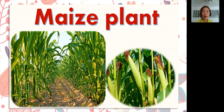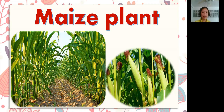The next example is maize plant. Again: maize plant. What you can see on the screen is maize plant. Let's spell the word: M-A-I-Z-E-P-L-A-N-T. Maize plant!